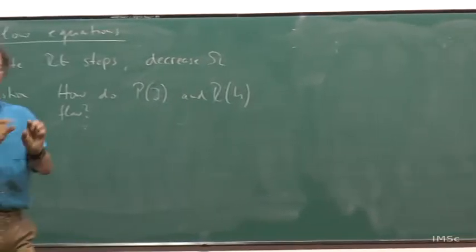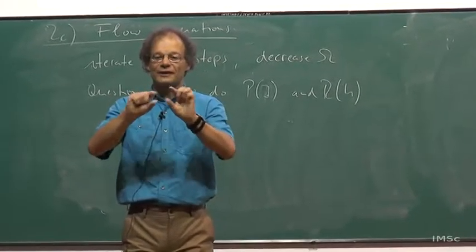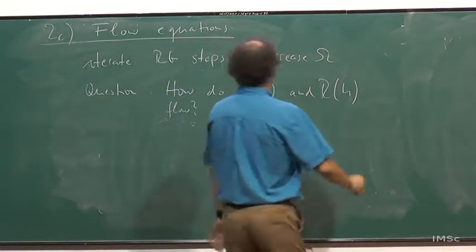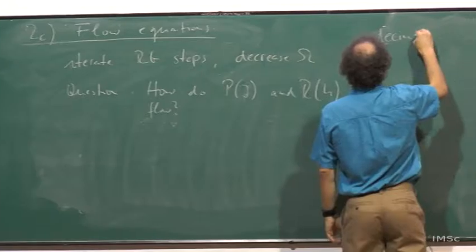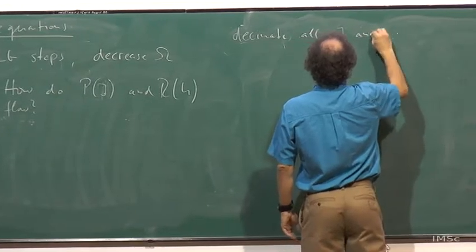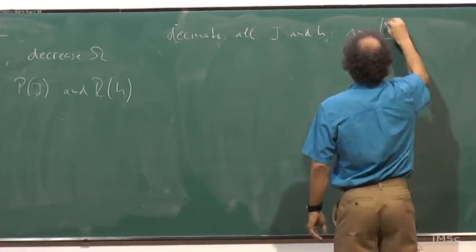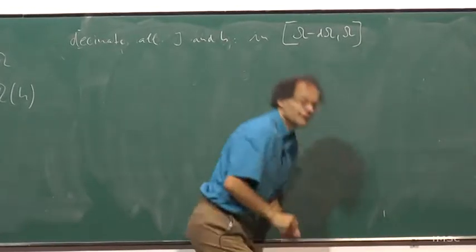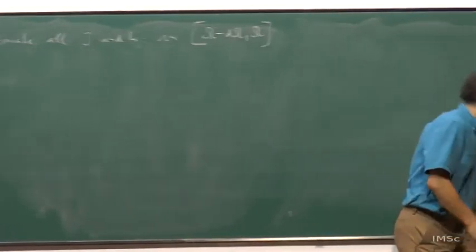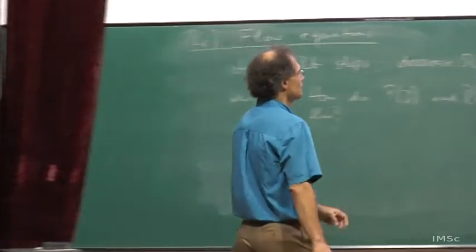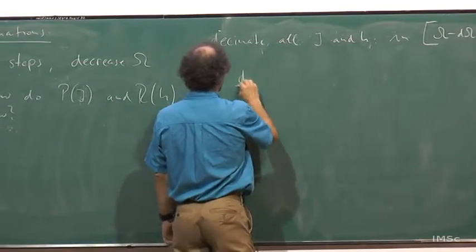We decrease Omega and follow the flow of the distributions P and R as a function of Omega. We want to answer: how do P(J) and R(H) flow as we iterate the RG?